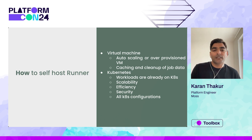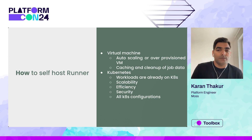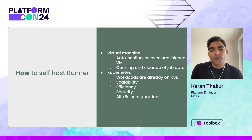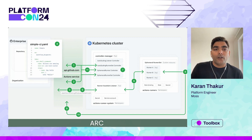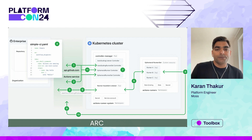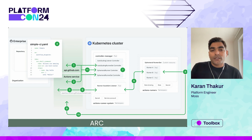If we are already using a Kubernetes cluster for all other applications, then why not use runners on the same Kubernetes cluster as well? Here comes the Action Runner Controller — ARC. Action Runner Controller is a Kubernetes operator that orchestrates and scales self-hosted runners for GitHub Actions. With ARC we can deploy self-hosted runners on a Kubernetes cluster, scale runners based on demand, and set them up at a repository, organization, or enterprise level.